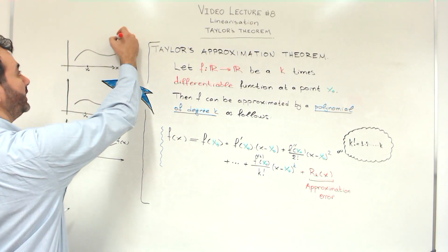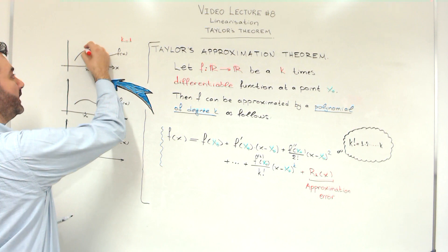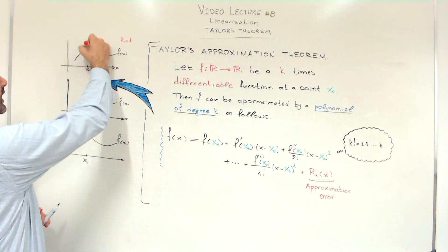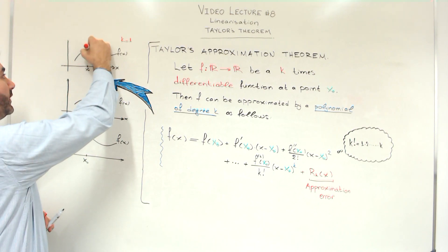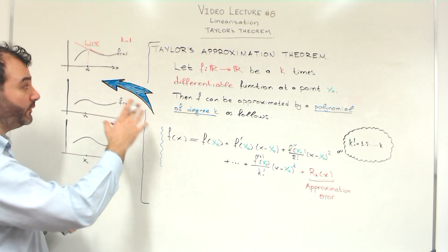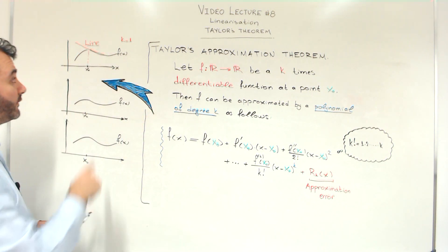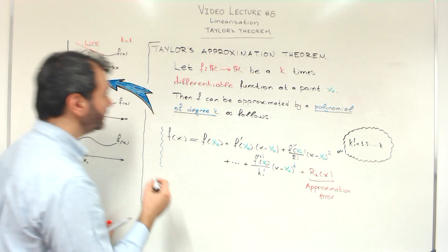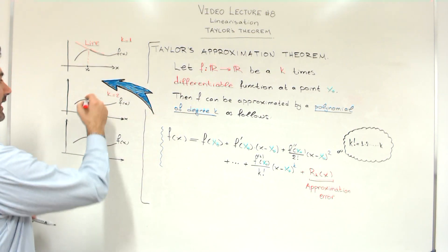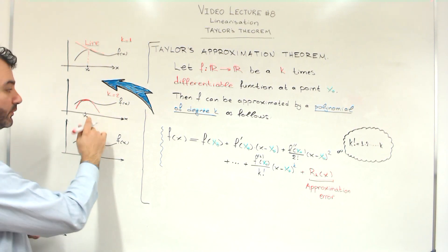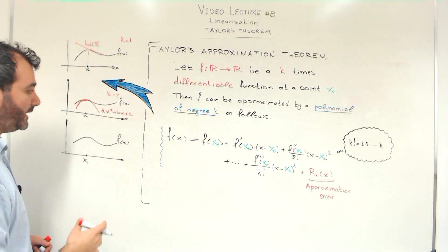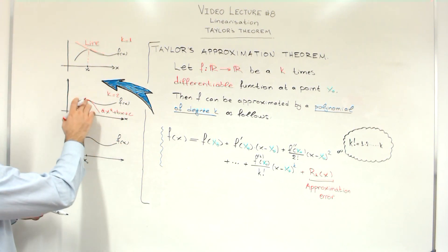If I keep k equals 1 — if my function is differentiable at the point x0 — then the theorem allows me to approximate it at this point with a line. So we have a linear approximation: we can approximate the function f with a line locally, which is the tangent of the graph of f. If I use k equals 2, then I can approximate the function close to x0 by a second order polynomial — a function of the form ax squared plus bx plus c, like a parabola.